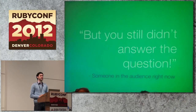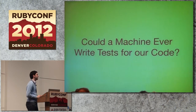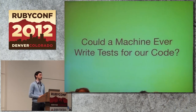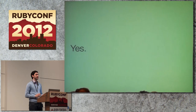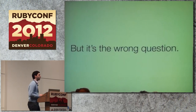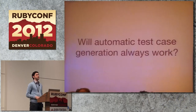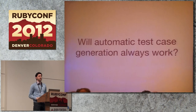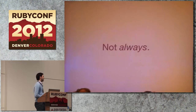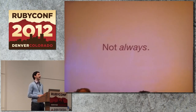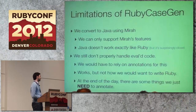But I still didn't answer the real question you all came for: could a machine ever write tests for our code? The answer is kind of simple — we just saw it. Yes. We just saw Ruby Case Gen generating test cases for code. The only problem is this is the wrong question. The better question is: will automatic test case generation always work for us? Should we just adopt this and use it all the time in our Rails code? The answer is not always — there are scenarios where we just cannot handle certain features of Ruby.